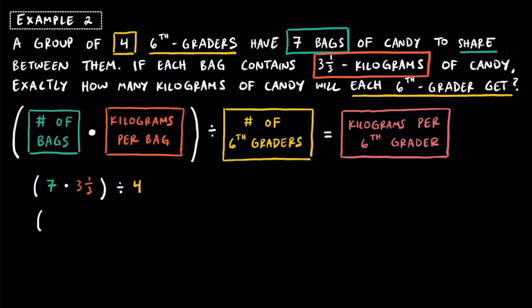Multiplying what's in the parentheses, we write seven as a fraction — seven over one — and multiply by three and a third as an improper fraction: three times three is 9, plus one is 10, so that's 10 over 3. Don't forget, afterwards we're going to divide that amongst four people. Multiplying fractions, we should look to cross-cancel, but I don't think we can here. Seven times ten on top is 70, and one times three on bottom is 3. Then we divide this by four people, written as four over one.